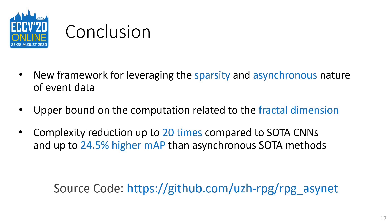To summarize, with this work we have proposed a new framework for leveraging the spatiotemporal sparsity of event data. We show that the upper bound on computational complexity is related to the intrinsic fractal dimension of event data. We validate our framework on two tasks applied to three datasets and show an up to 20 times reduction in computational complexity with respect to standard CNNs without sacrificing performance. In conclusion, our proposed framework makes an important step towards low latency and high-accuracy event vision algorithms.